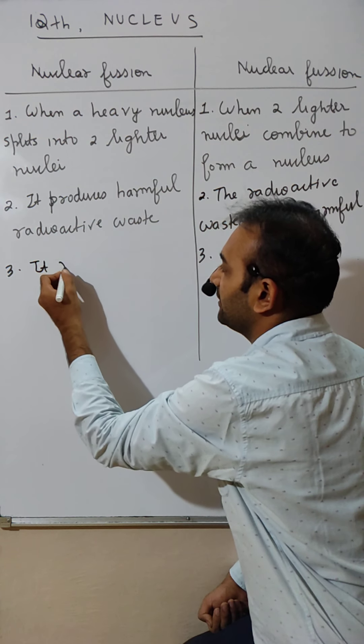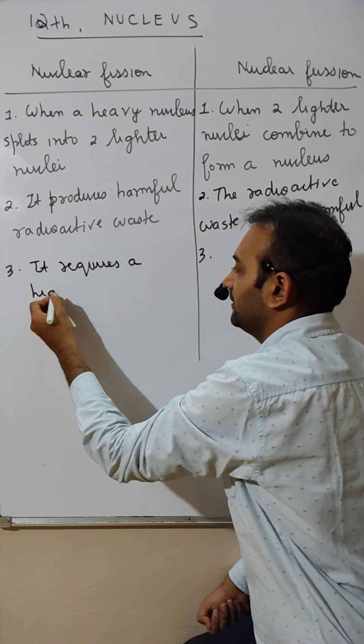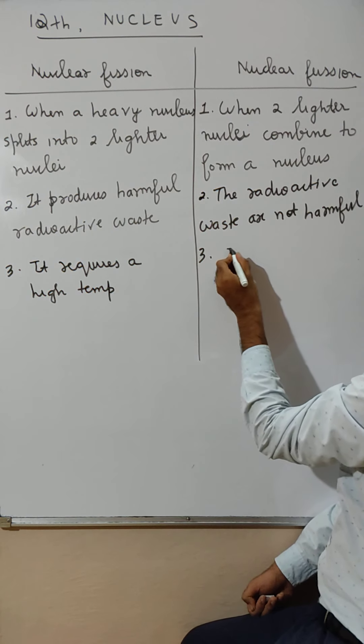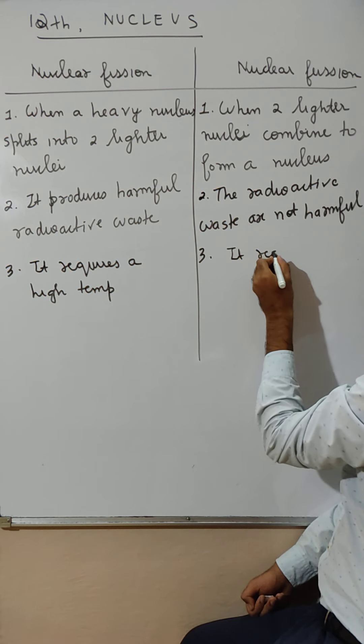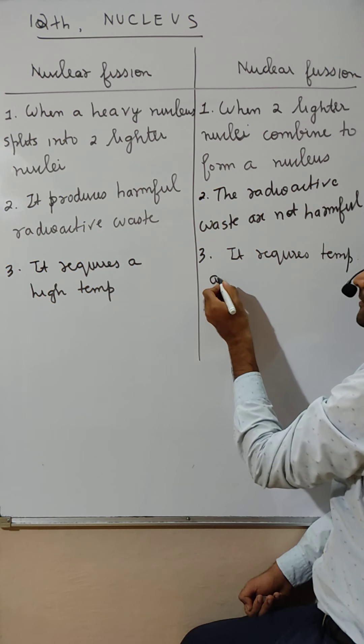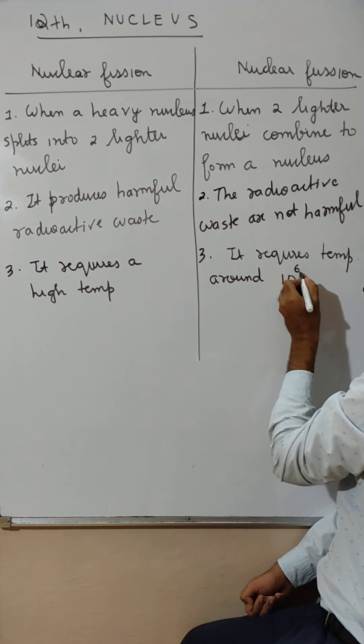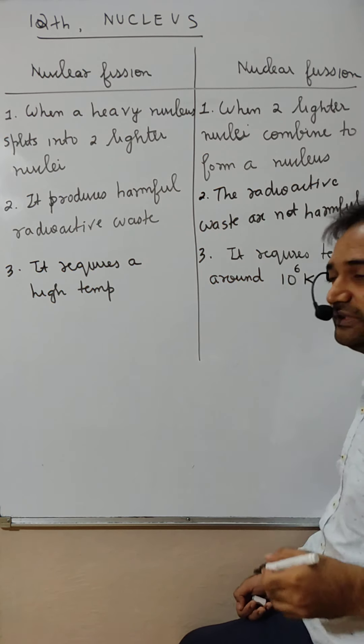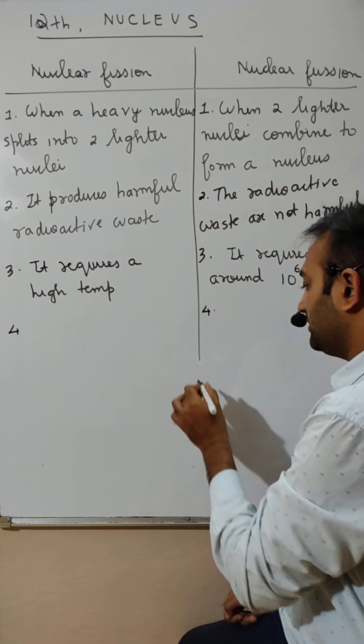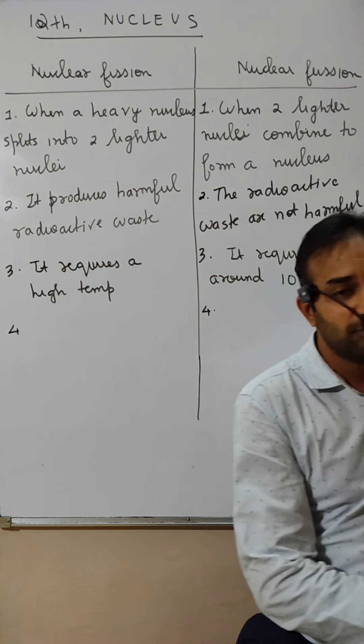Fusion requires temperature around 10 raised to 6 Kelvin. 10^6 Kelvin. How big is that? Very big, very high. We can write both. At least we should know at least one example for both.